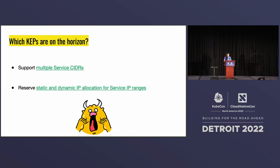So which features are on the horizon that are going to help us? The first is multiple service CIDRs. Similarly to the multiple cluster CIDRs, now we can add and actually tune the allocation of service CIDRs — we can change that CIDR size, we can actually tune the IPv6 default to meet some of the best practices on the IPv6 side. The second is reserving static and dynamic allocation for service IP ranges. This minimizes IP conflicts when you might have specific services that need a static or specific service IP. This KEP is actually helping define what that service range looks like in terms of balancing the fraction that's reserved for static versus dynamic applications.